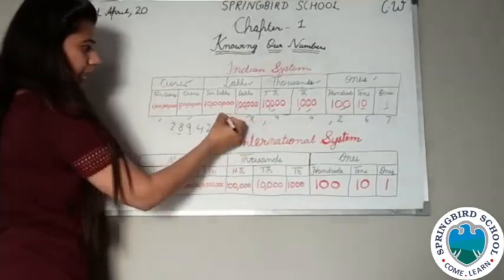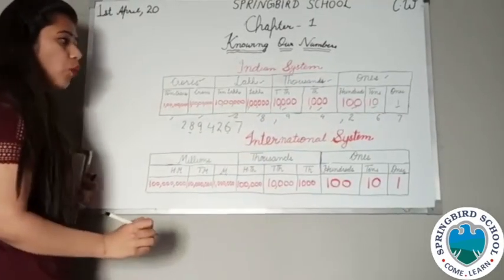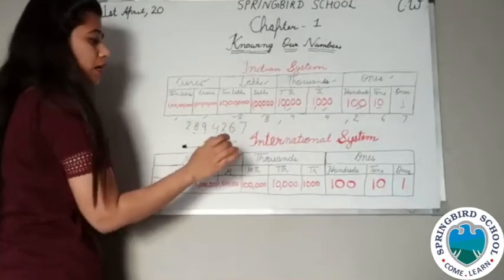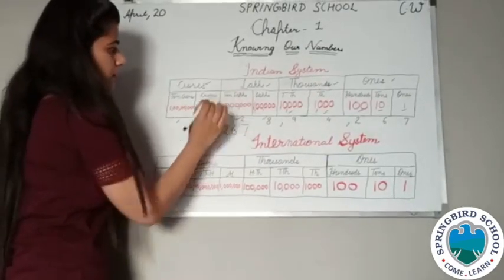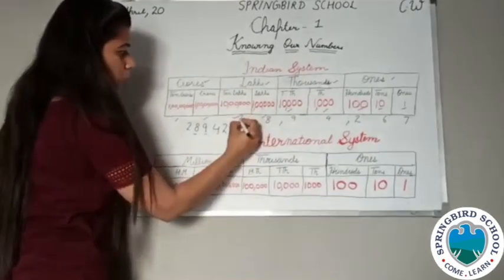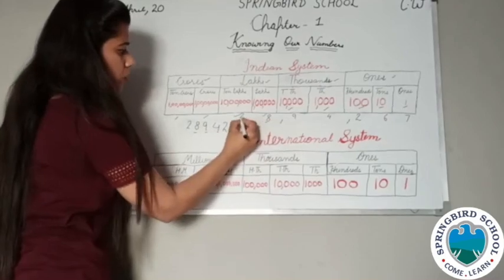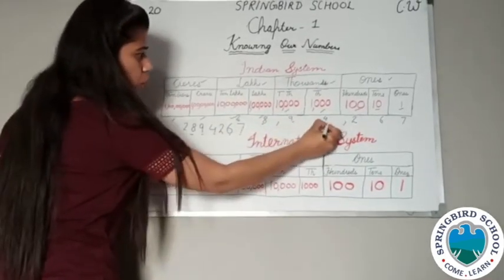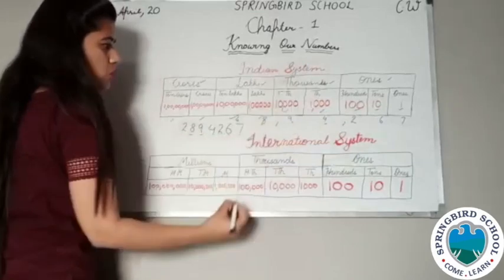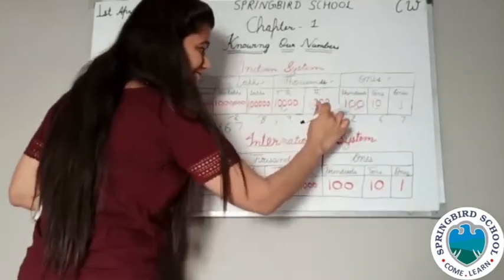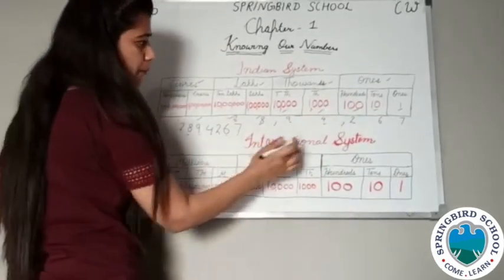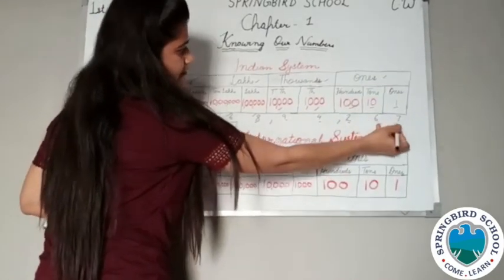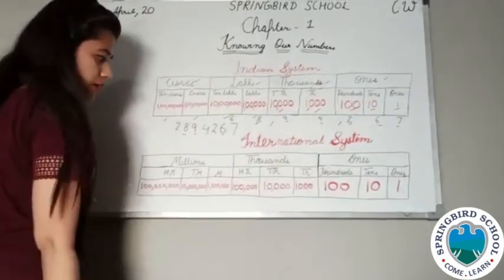So how do you write these numbers in words? You will read them together by looking at the heads. In the lakh head, how many numbers are there? Two and eight — so we write twenty-eight lakh. Then ninety-four thousand. And in the ones head each number is separate: two hundred sixty-seven. Clear everyone?